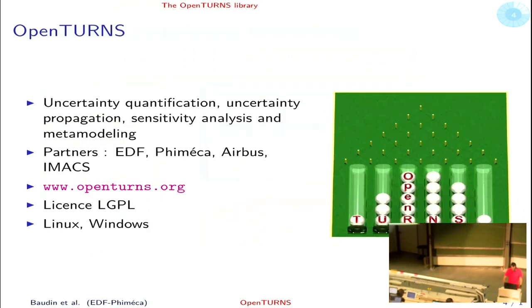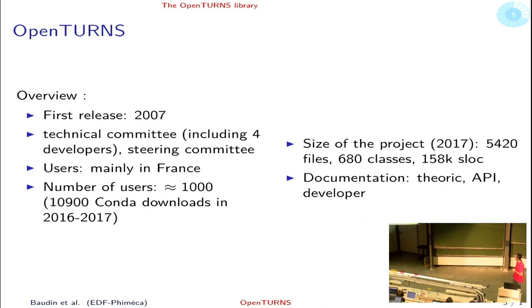Let's go to OpenTURNS. OpenTURNS is a library for uncertainty quantification and propagation, sensitivity analysis, and meta-modeling. It is developed by four partners: EDF, FIMECA, Airbus, and IMACS. This is the website. OpenTURNS is an open source project under the LGPL license and is available on Linux and Windows. It is developed since ten years now. There is a technical committee including four developers, a steering committee. Most users are located in France, approximately 1,000 of them.